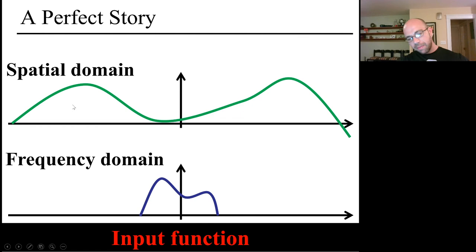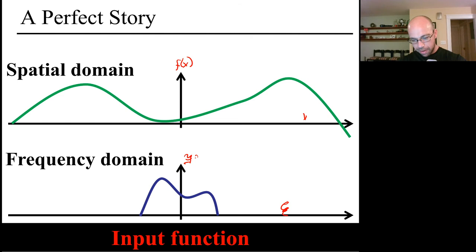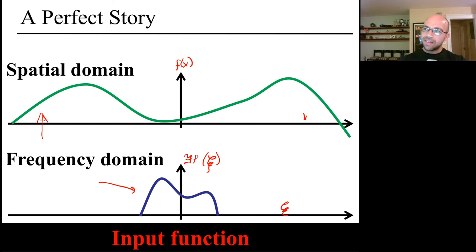That completes our story. To summarize: we have some function f of x in the spatial domain and a corresponding Fourier transform in the frequency domain. In graphics, we work in the spatial domain but keep our brains in the frequency domain to understand the effects of what we're doing. The first thing we do in the spatial domain is sample — hopefully at a rate that's above the Nyquist rate.